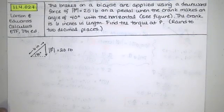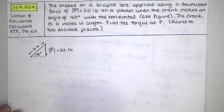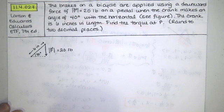In this video we solve problem 11.4.027 from the Larson and Edwards Calculus Early Transcendental Functions text, seventh edition. We're told that the brakes on a bicycle are applied using a downward force with magnitude 20 pounds on a pedal when the crank makes an angle of 40 degrees with the horizontal.